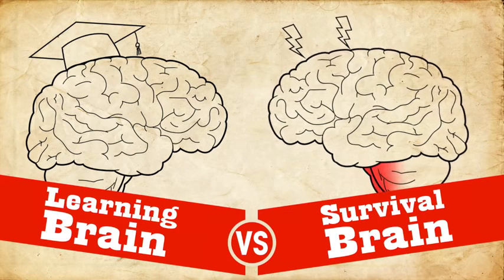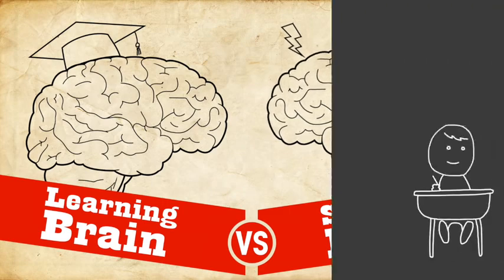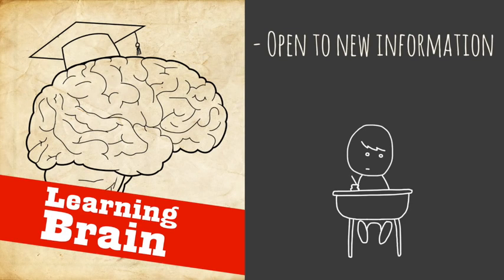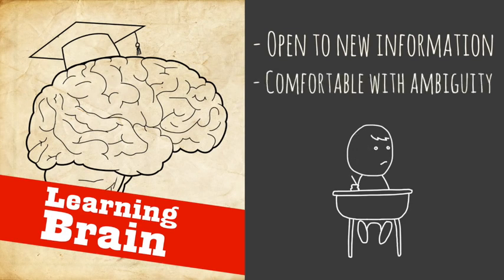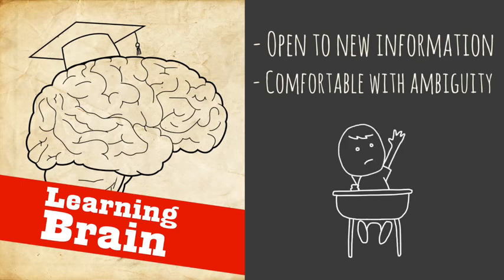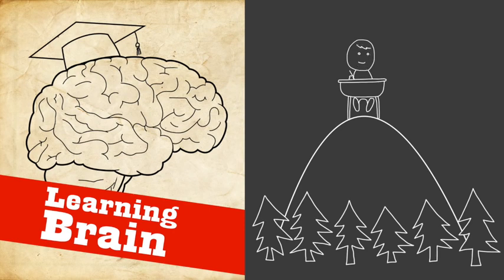And this is the difference. So learning brain is this brain that's open to learning new information and it's completely okay with ambiguity and grays and vagueness. And it sees the big picture. It pulls back and is on the balcony, can look over the forest and figure out what's going on.